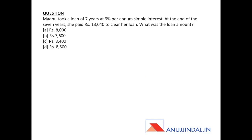Let's start with the first question. Madhu took a loan for seven years at nine percent per annum simple interest. At the end of seven years, she paid rupees 13,040 to clear her loan. So the amount is given, time is given, rate of interest is given, and we have to find the principal — the original loan amount.